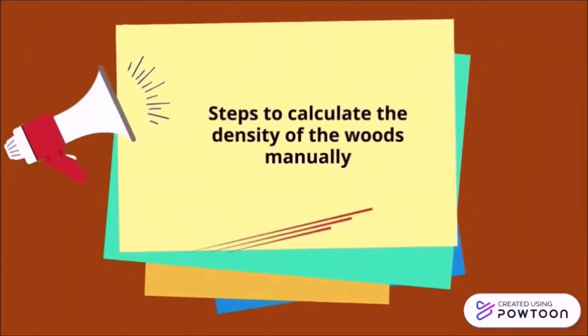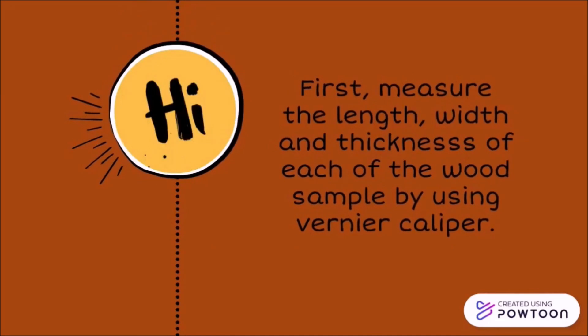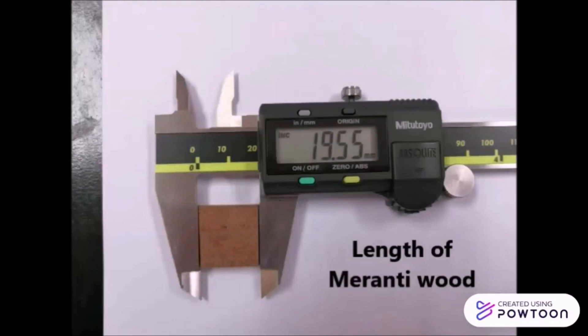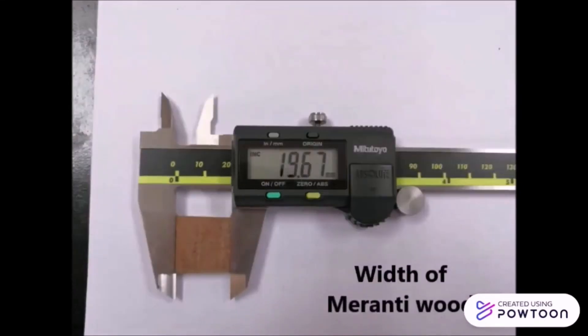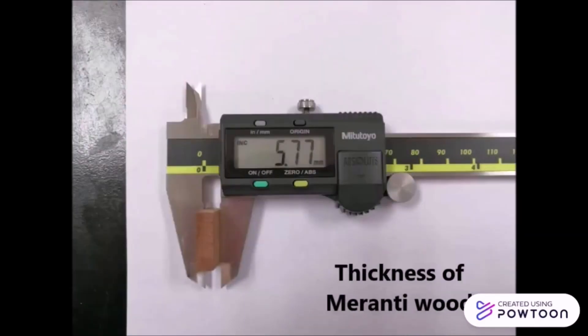Steps to calculate the density of wood manually: first, we need to measure the length, width, and thickness of each wood sample using the vernier caliper. Here we measure the length, width, and thickness of the meranti wood sample.